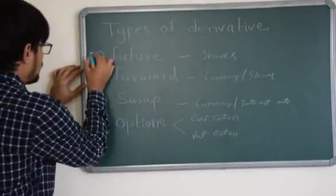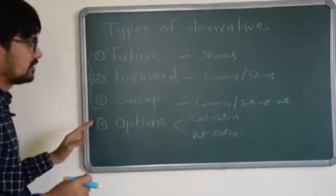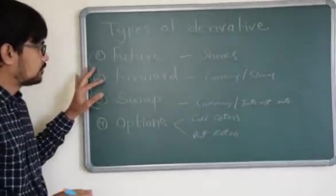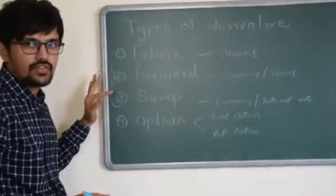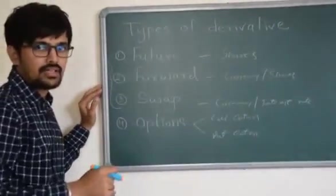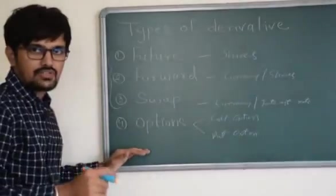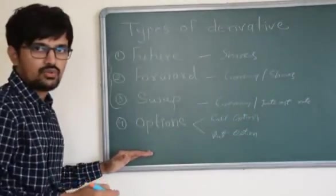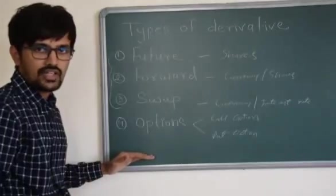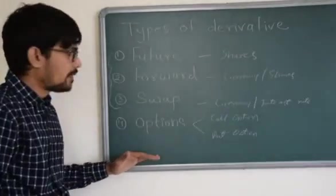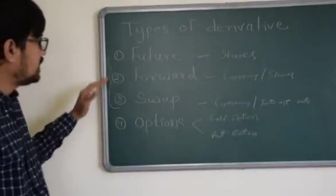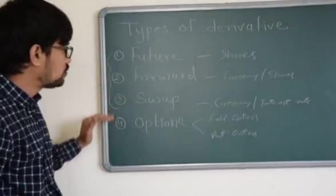Generally in first three, there is a contractual obligation for both the parties to satisfy the contract. Generally it is on the buyer. But in case of option, there is a right as well as option whether to fulfill the contract or to cancel it. I will explain each of these derivative instruments to you in detail.